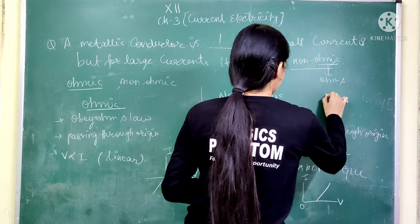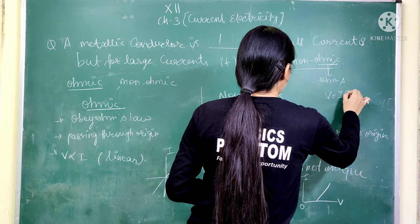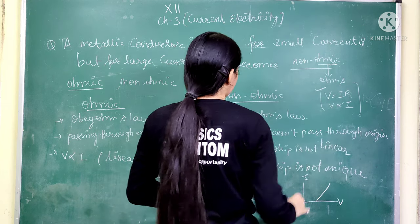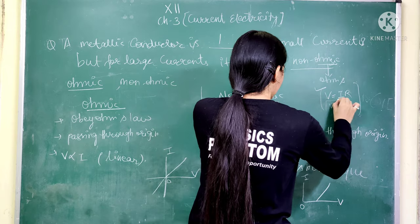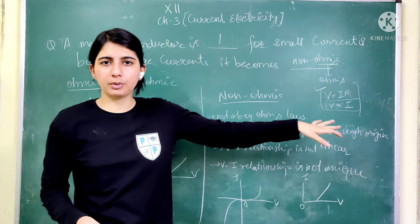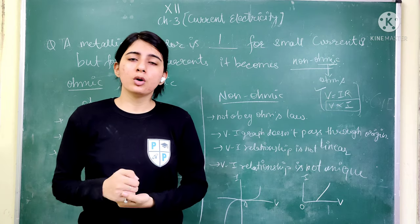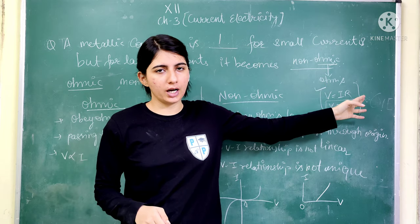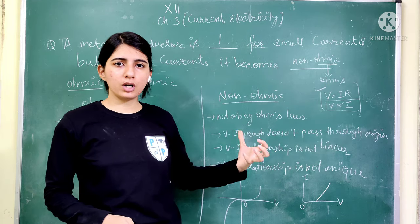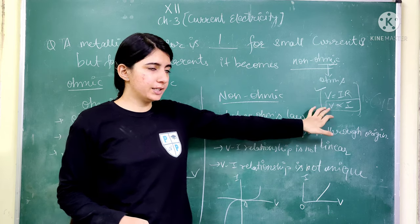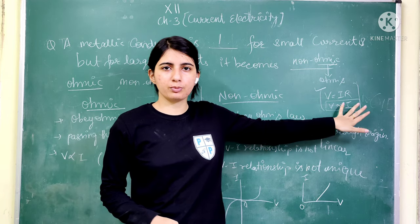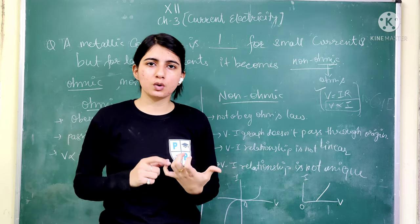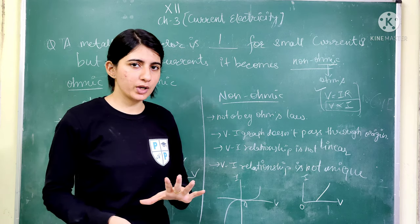In ohmic conductors, V is directly proportional to I. The formula is V = IR, where V is voltage, I is current, and R is resistance. Conductors or materials that follow this relationship — V directly proportional to I — are called ohmic conductors. Those that do not follow or obey this relationship are called non-ohmic conductors.